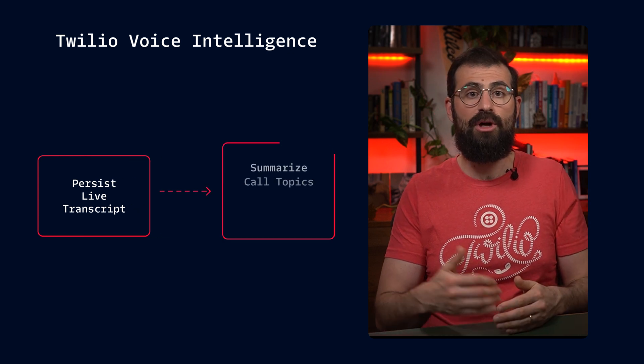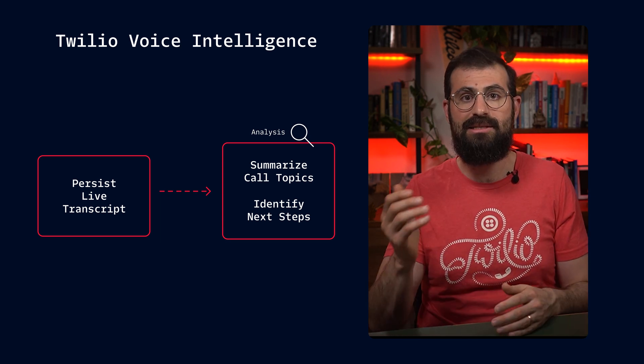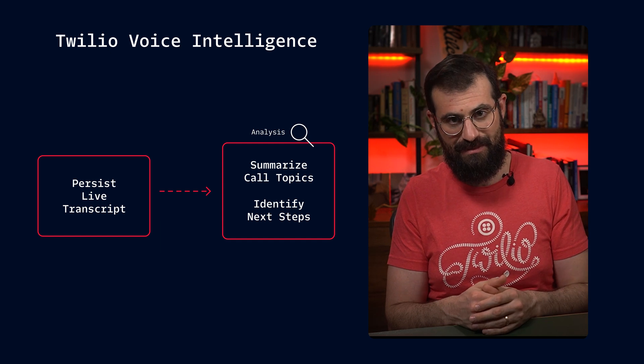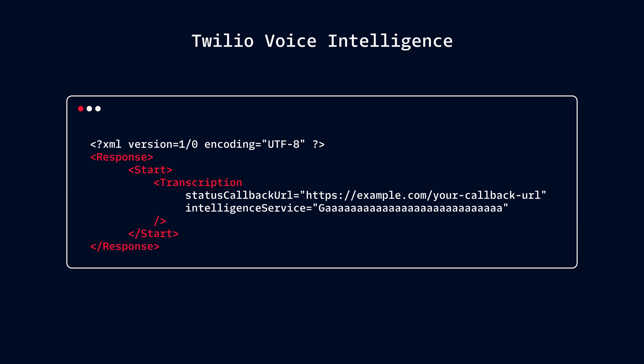You can automatically store real-time transcriptions in Voice Intelligence's historical log for future analysis. Second, you can run post-call language operations. Once the call concludes, there are automated AI-powered insights and actions, like summarizing call topics or identifying next steps. And third is the seamless configuration. You can enable all of this by adding the intelligence service parameter to your transcription session via the TwiML transcription verb or the real-time transcription API. This allows you to extract actionable insights at scale while ensuring seamless integrations with your existing workflows. With Twilio Voice Intelligence, every conversation becomes an opportunity for data-driven decision making. To explore more, check out our TwiML and API documentation.